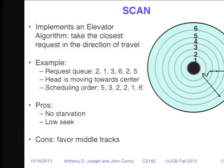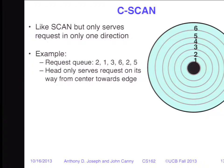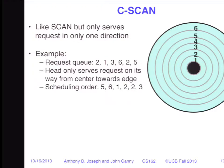A fairer approach is C-SCAN: we only service requests in one direction — from the center to the outside — and come back without servicing requests. With queue 2,1,3,6,2,5 starting at track 5: service 5, continue to 6, then seek all the way back to track 1 and service 1, 2, 2, 3. Advantage: fairer than SCAN. Disadvantage: we have these long seeks in one direction where we don't service anything — it seems like wasted work, but it's a trade-off for better fairness.